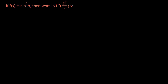Let's take a look at this next problem. It reads: if f of x equals sine squared of x, then what is f double prime of pi over 2? We're to find the second derivative of this function and evaluate it at pi over 2.